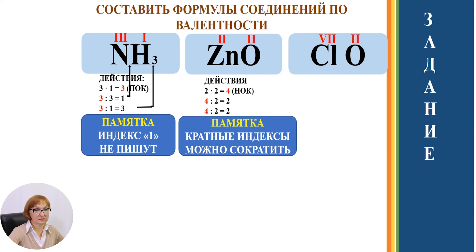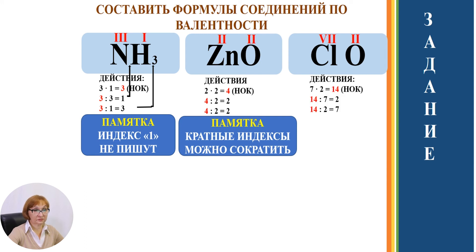Следующая формула состоит из атома хлора, который проявляет валентность 7, и атома кислорода, который проявляет валентность 2. Составляем формулу: умножаем 7 на 2, получаем 14 — наименьшее общее кратное. Делим НОК на валентность каждого элемента, получаем индексы 2 и 7. Читаем: Cl2O7.